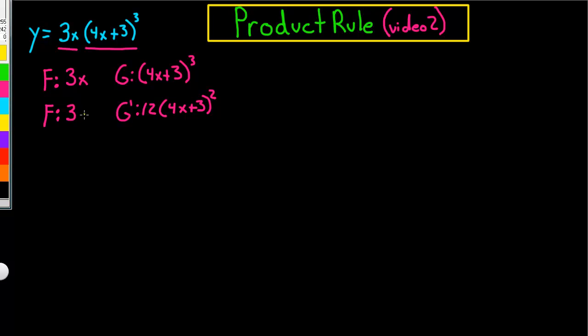Now, we're going to cross multiply. So, this is the first step. So, we're going to take 3 times 4x plus 3, all to the third power. Now, the second step is to take, I'm sorry, this is f prime. Sorry about that.